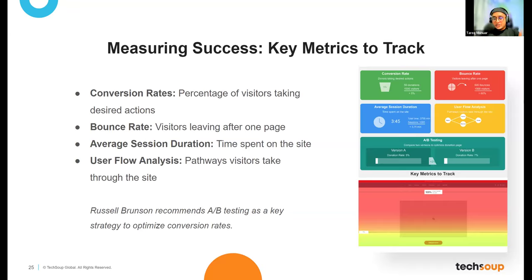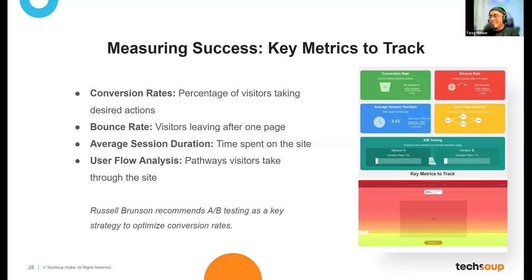Through continuous split testing, you can find the best version possible for your homepage or landing page. You should also know your bounce rate — how many visitors leave after one page. If it's too high, you have to work on your website. Monitor average session duration — how long people spend on your website. And analyze user flow: how good is your funnel, how many steps does a user have to take to complete an action like 'Donate Now'? The flow needs to be well placed.